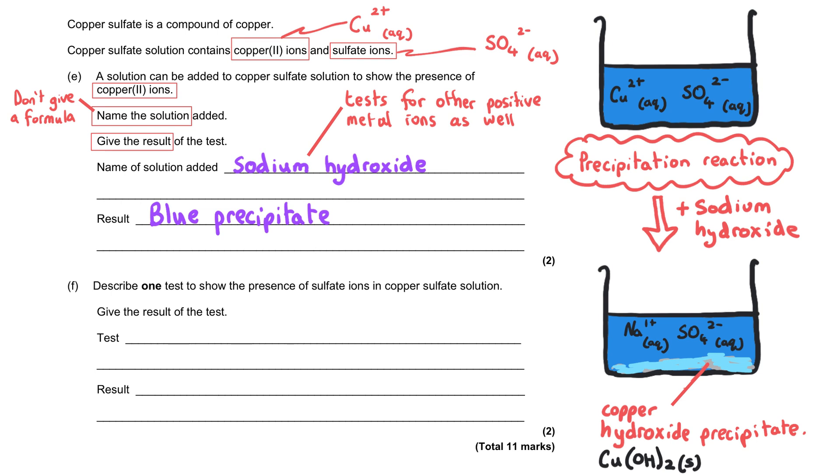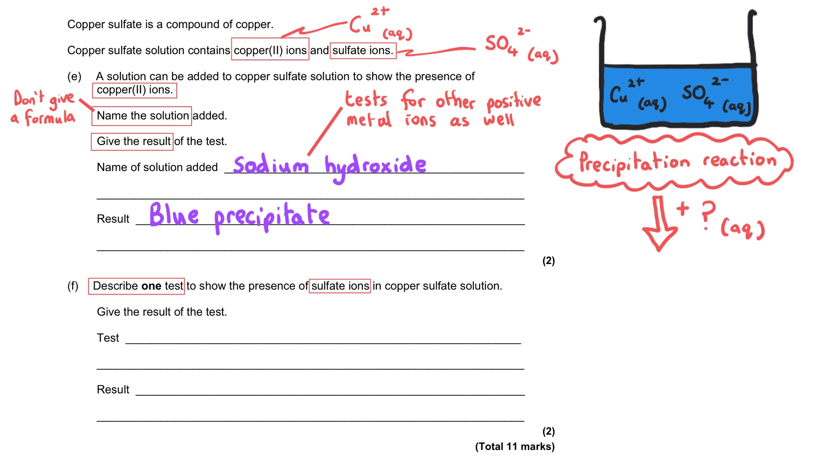We're asked to describe one test to show the presence of sulfate ions in copper sulfate solution and give the result of the test. This is effectively the same thing here except that they haven't really directly asked us to name the chemicals.